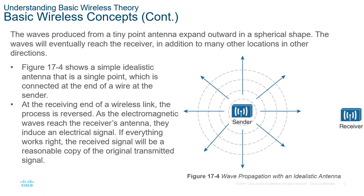Waves produced by an antenna expand outward in a spherical shape, eventually reaching the receiver as well as many other locations. In this omnidirectional example, the signal goes everywhere. After the receiver end of a wireless link processes the signal and reverses it, the electromagnetic wave reaching the receiving antenna induces an electrical signal. If everything works correctly, the receiver will reasonably copy the original transmitted signal and decode it.